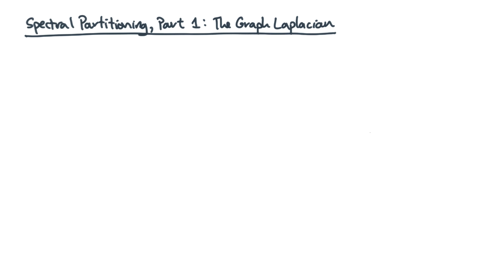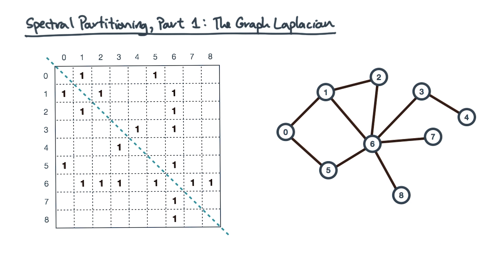For me, one of the most fascinating classes of graph partitioning methods are the so-called spectral methods. That's spectral as in rainbows, not ghosts. Spectral methods go back to the linear algebraic view of graphs, and they have what for me is a surprising physics-based interpretation. We'll get there, but first, let's remind ourselves about the connection between graph structure and certain matrices.